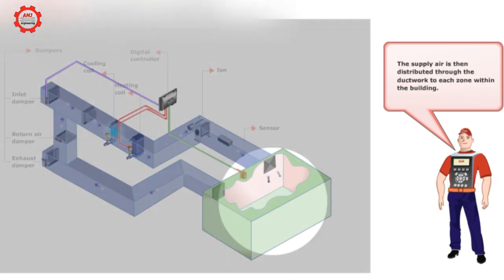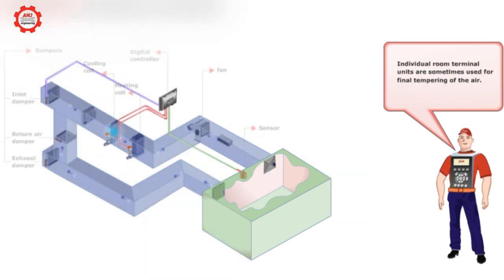The supply air is then distributed through the ductwork to each zone within the building. Individual room terminal units are sometimes used for final tempering of the air.